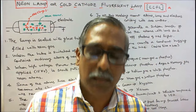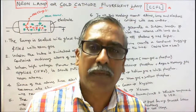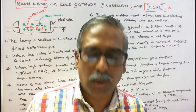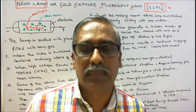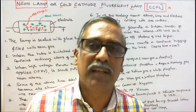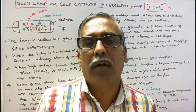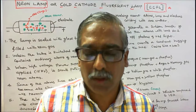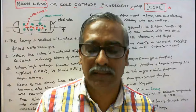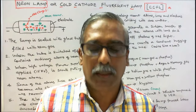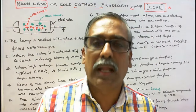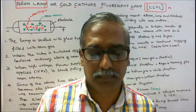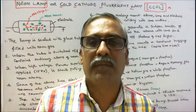Neon is commercially extracted by the fractional distillation of liquid air and is considerably more expensive than helium, since air is its only source. In 1917, Daniel Moore, a GE general electric engineer, made his mark on lamp history by inventing the negative glow neon lamp. He developed small bulbs with two electrodes.